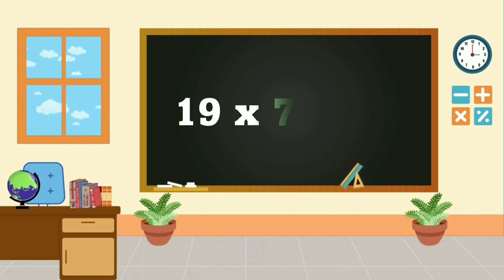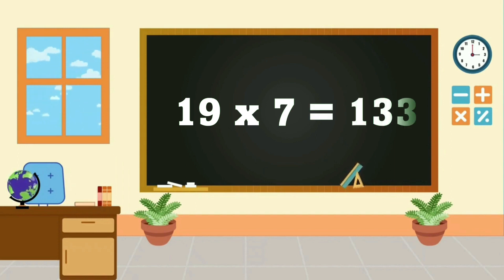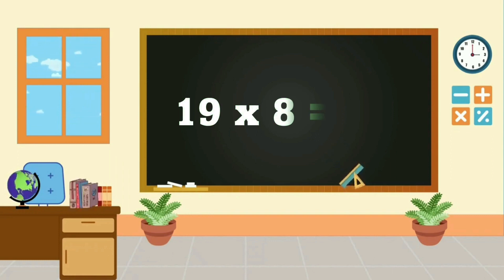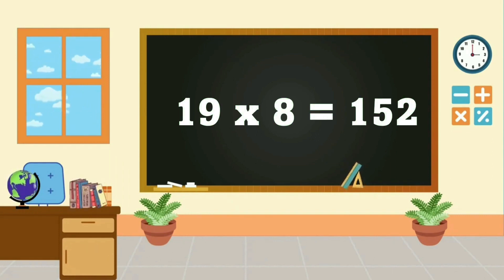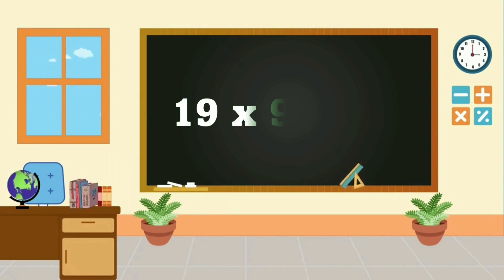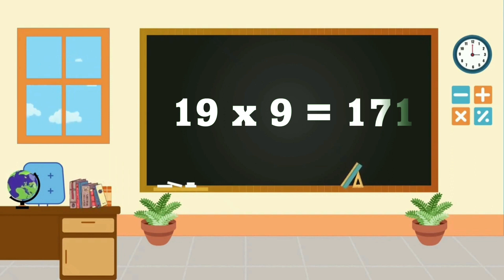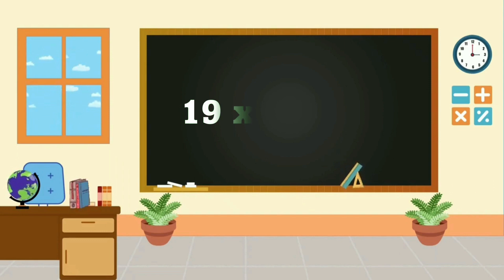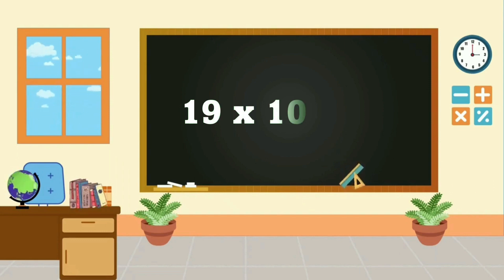19, 7's are 133. 19, 8's are 152. 19, 9's are 171. 19, 10's are 190.